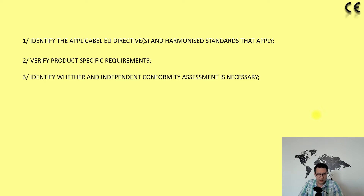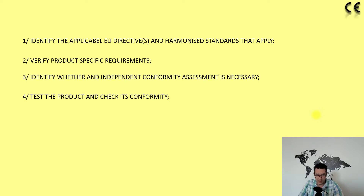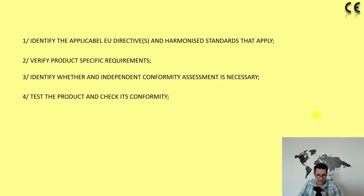The fourth step is to test the product and check its conformity. As a manufacturer you are the only one responsible for testing your products and checking that they meet the essential requirements and applicable directives. An important part of this procedure is the risk assessment, and you can confirm conformity with the essential requirements by applying harmonized standards.